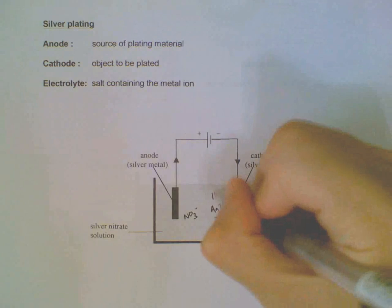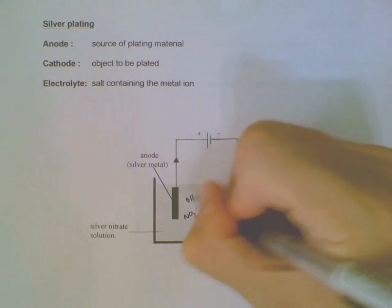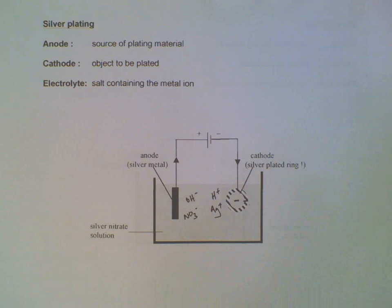We have hydroxides and hydrogen from water. The negative terminal will attract the positive ions. In this case, silver will be preferentially discharged into silver metal and it will coat the ring here.